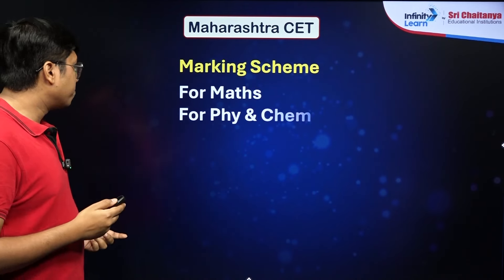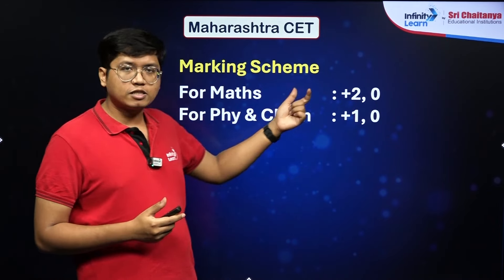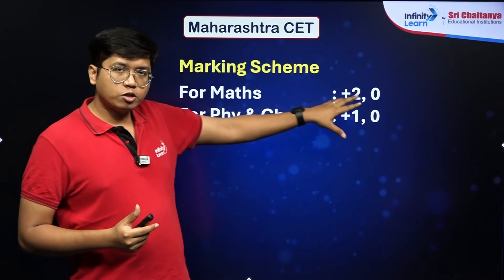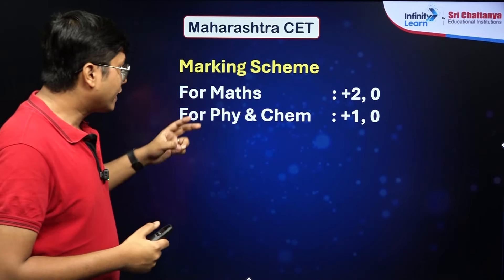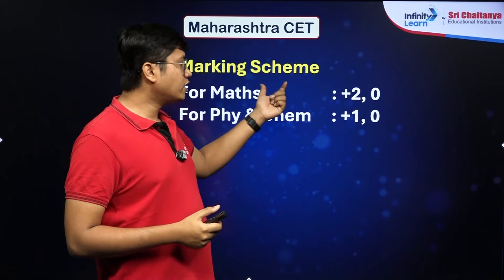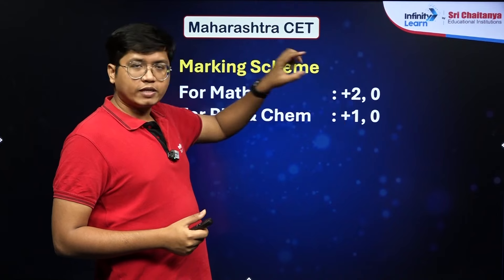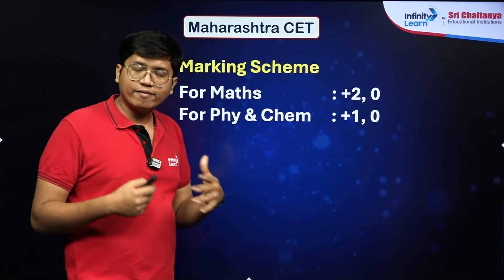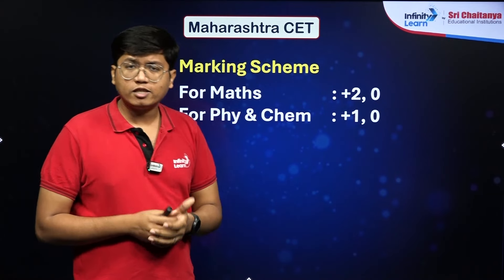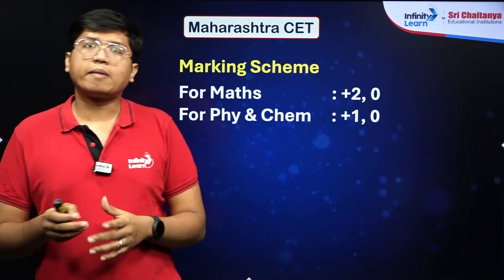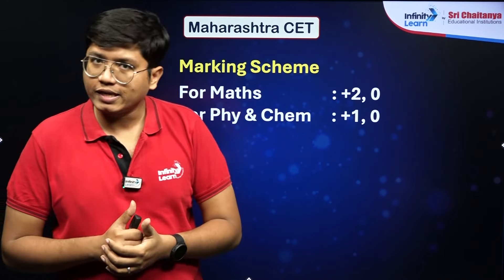The maths marking scheme is +2 and 0, whereas for physics and chemistry it's +1 and 0. Importantly, there is no negative marking in the Maharashtra CET examination. Even though there are 50 questions each in maths, physics, and chemistry, each maths question gives you +2 if correct, while physics and chemistry give +1. So the total marks of the examination is 200 — 50×2 from maths and 50+50 from physics and chemistry.